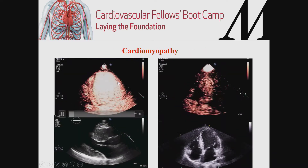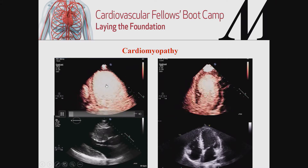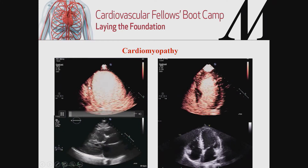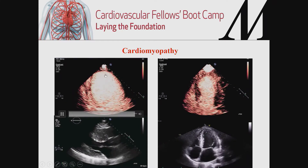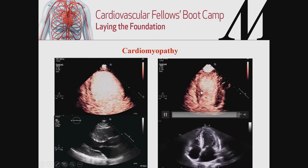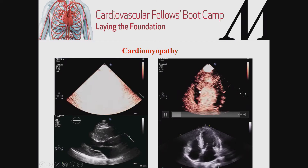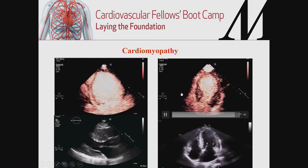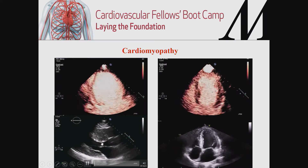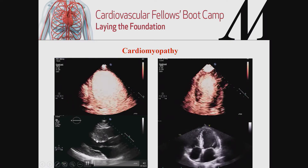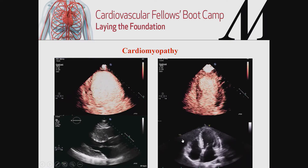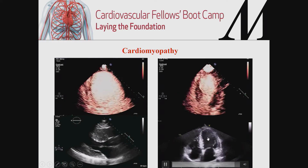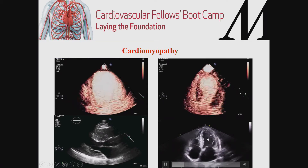Regarding cardiomyopathies, this is a contrast-enhanced image where we inject microbubbles to appreciate a severely dilated, dysfunctional myocardium — a dilated cardiomyopathy. This patient has Takotsubo with apical ballooning and basal hyperkinesis. This patient has severe asymmetrical hypertrophy — a HOCM patient. And this patient has restrictive cardiomyopathy with big atria and increased wall thickness.